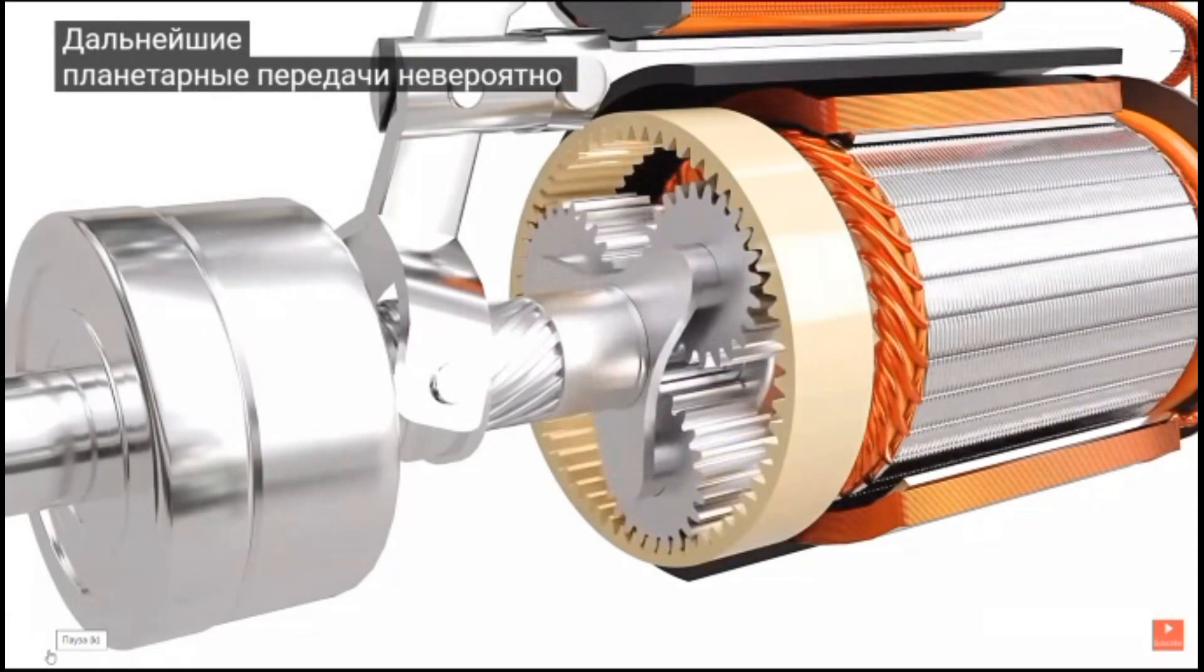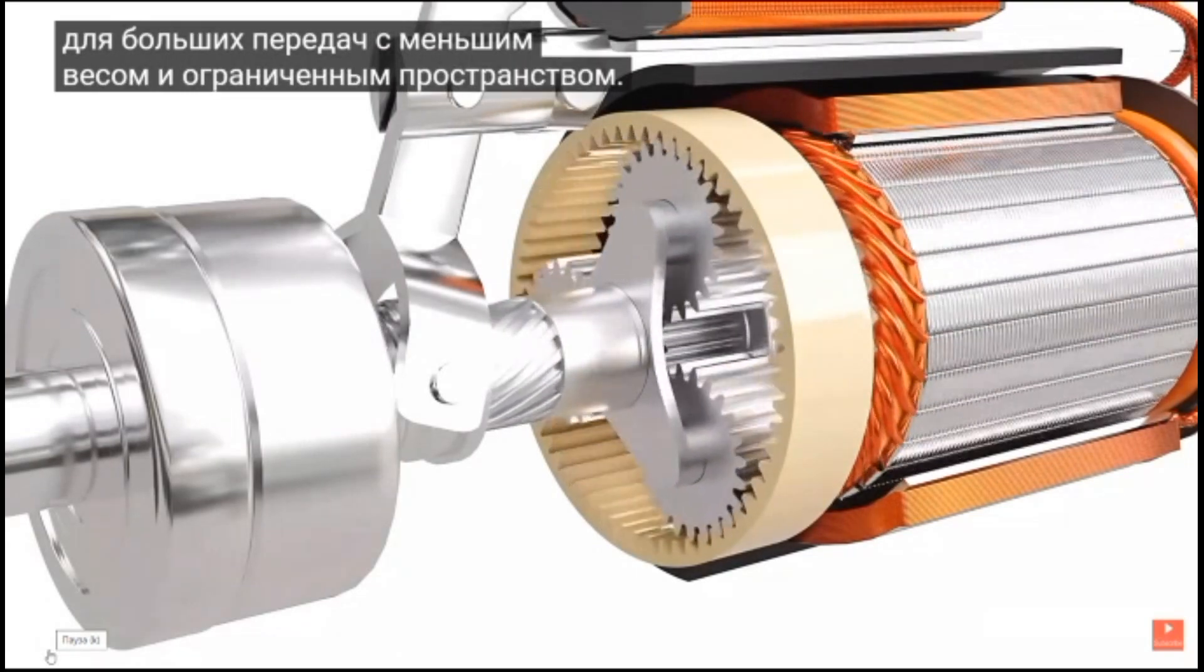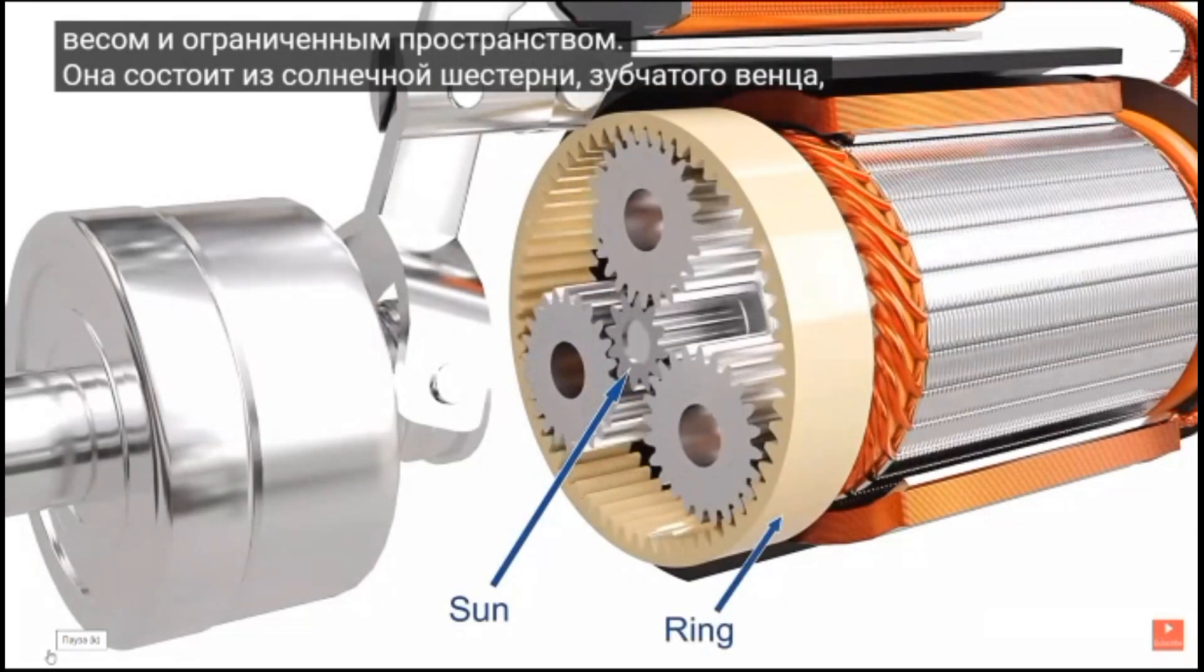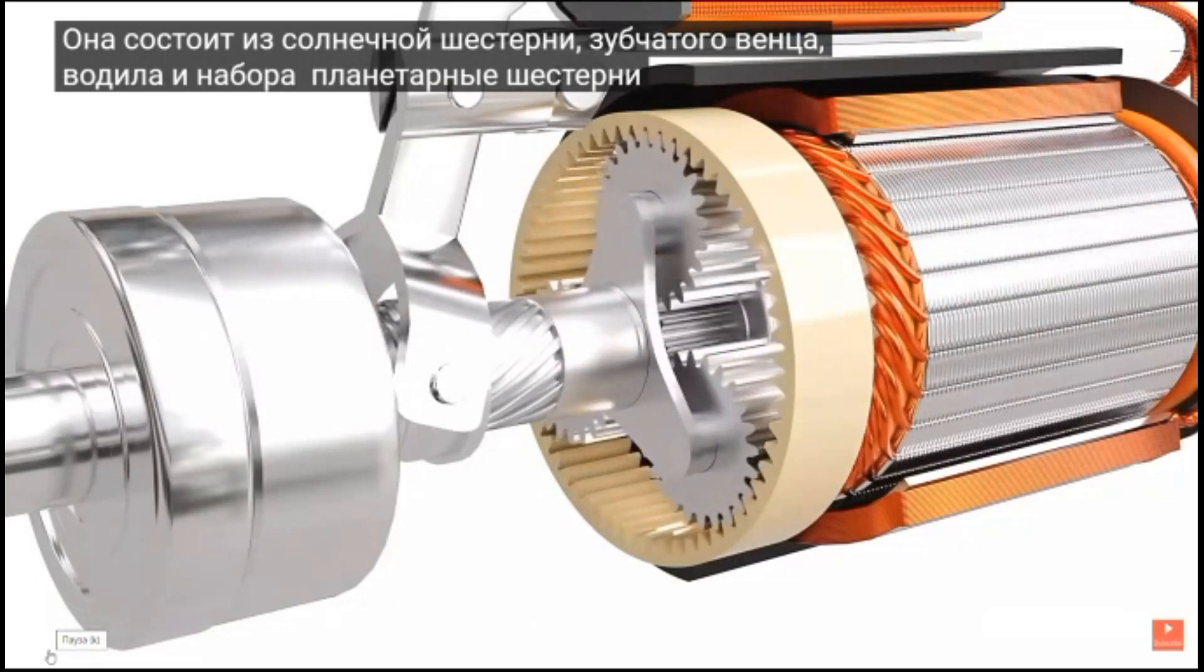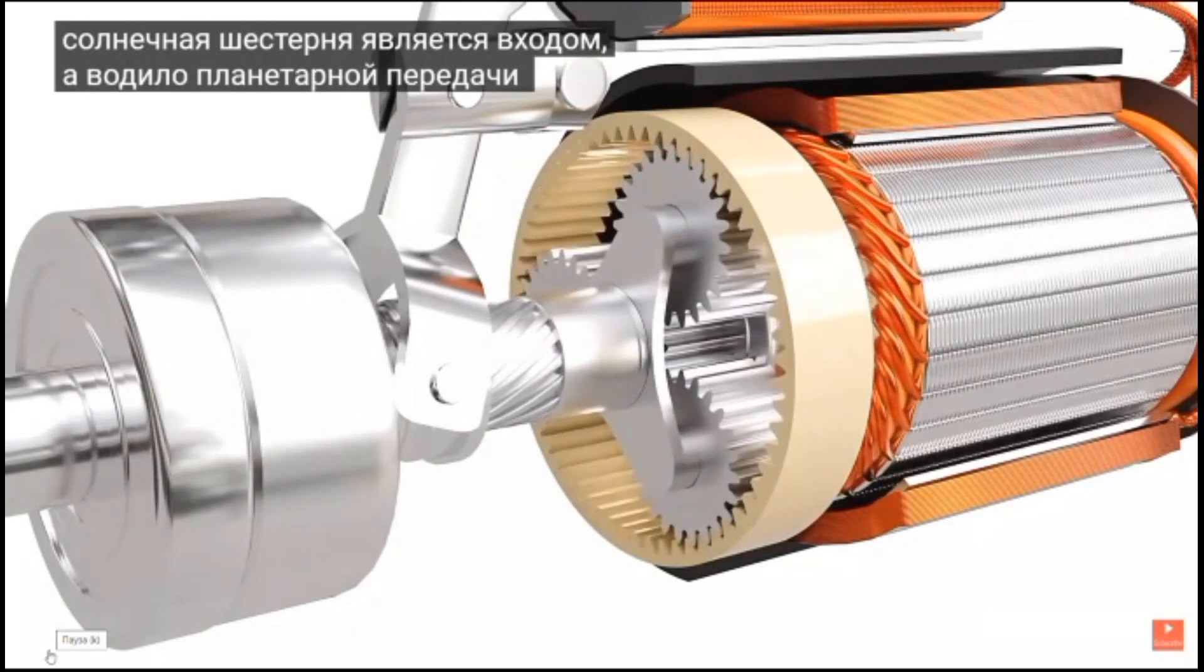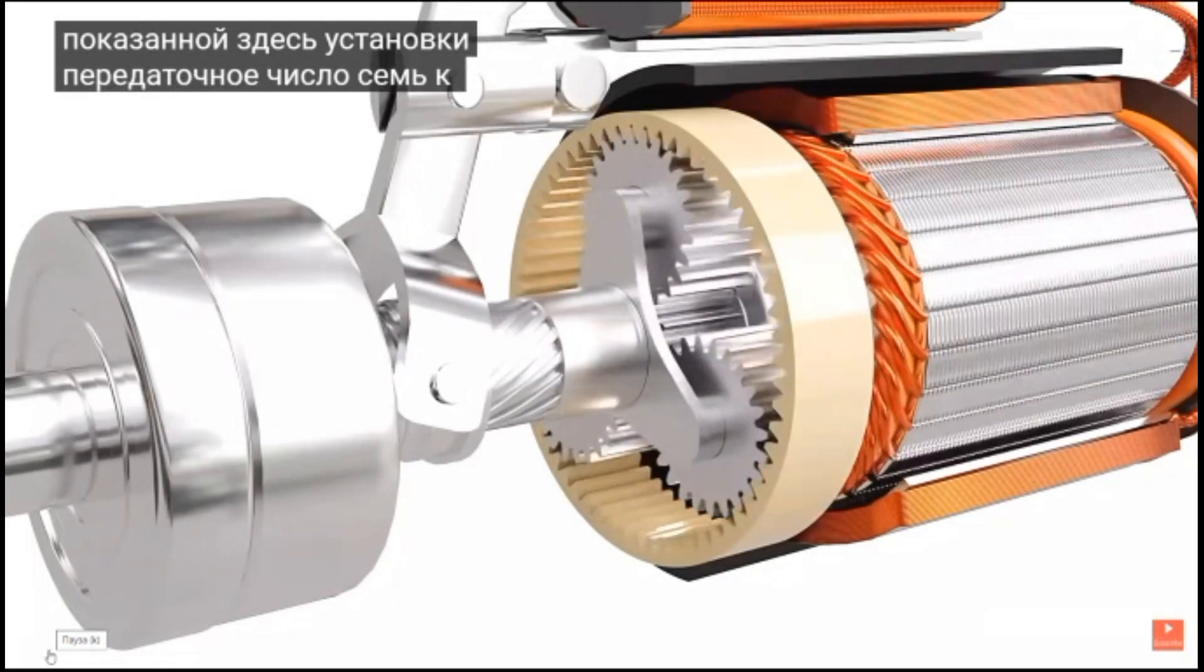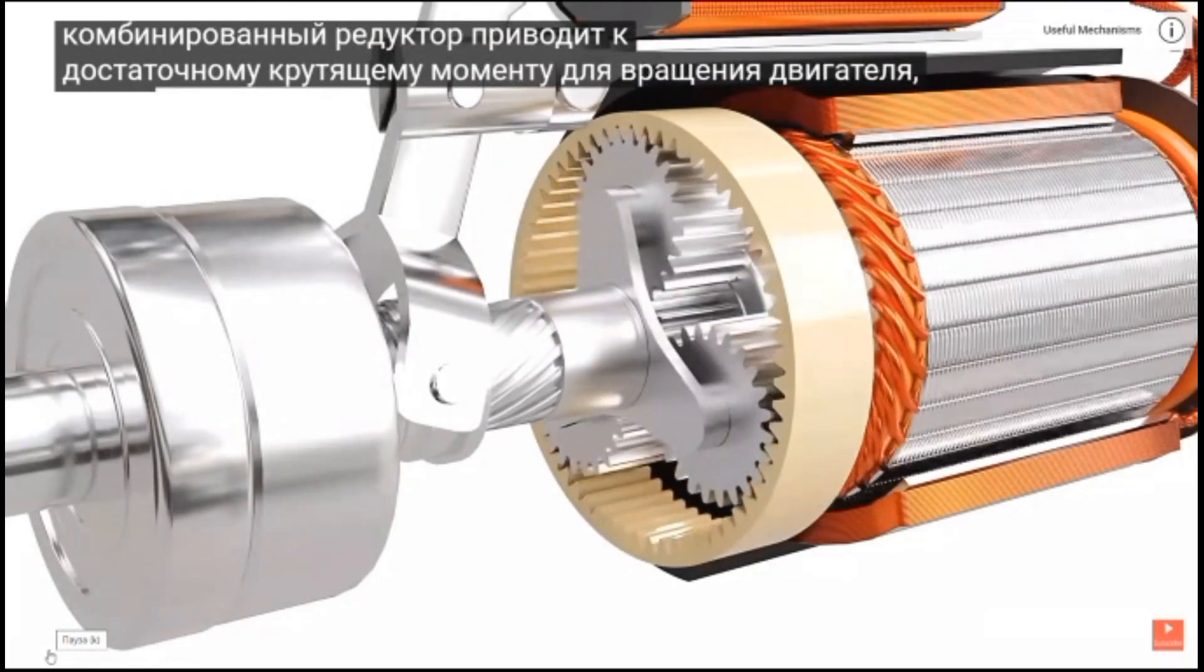Planetary gears are incredibly useful for large gear reductions with less weight and limited space. It consists of a sun gear, a ring gear, a carrier, and a set of planet gears. In starters, the ring gear is fixed, the sun gear is the input, and the planet carrier is the output. For the setup shown here, the gear ratio is 7 to 1. The combined gear reduction results in enough torque to spin the engine.